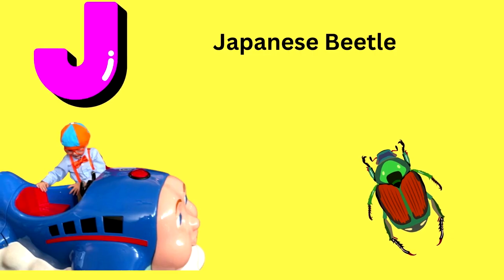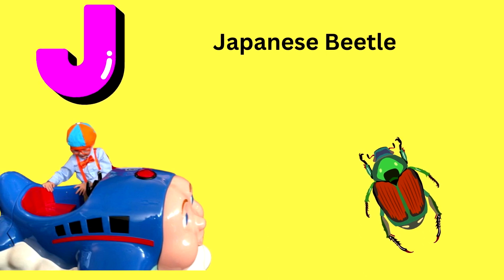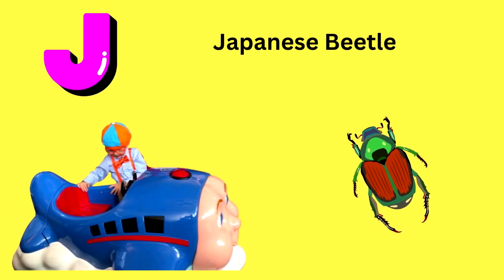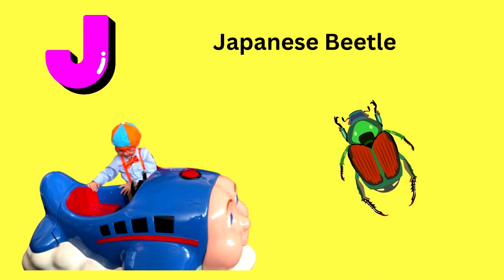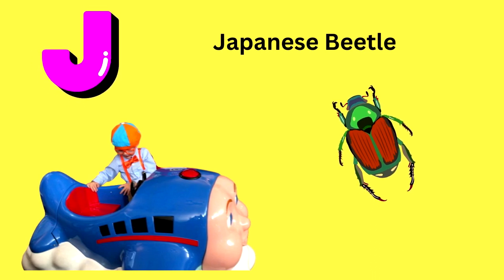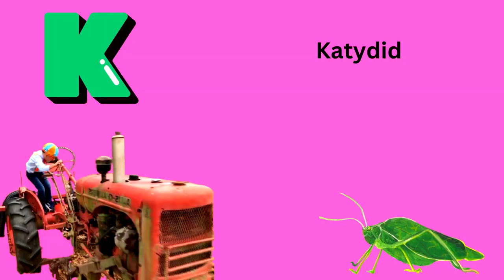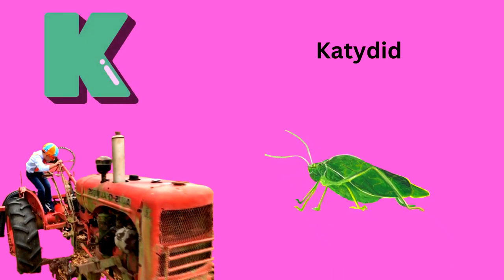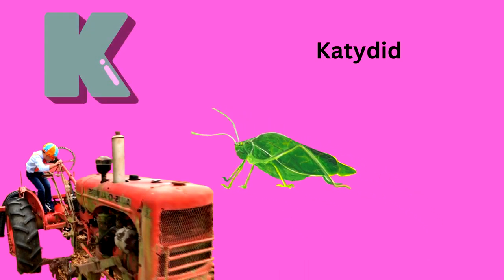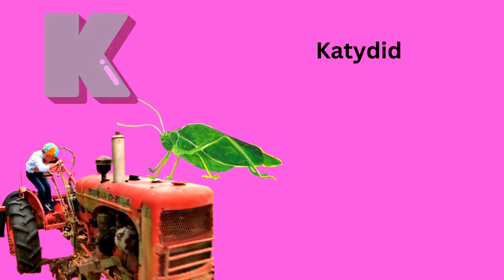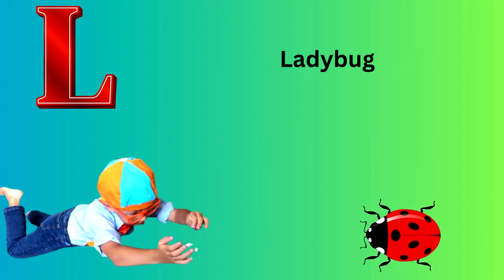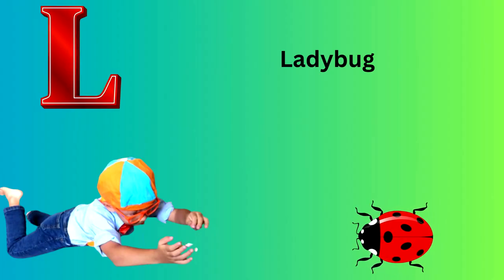J is for Japanese Beetle. K is for Katydid. L is for Ladybug.